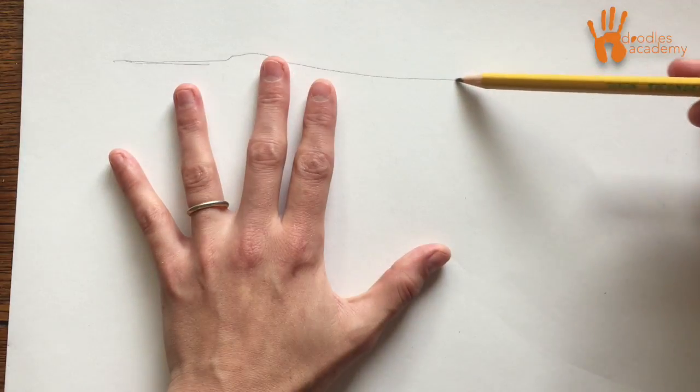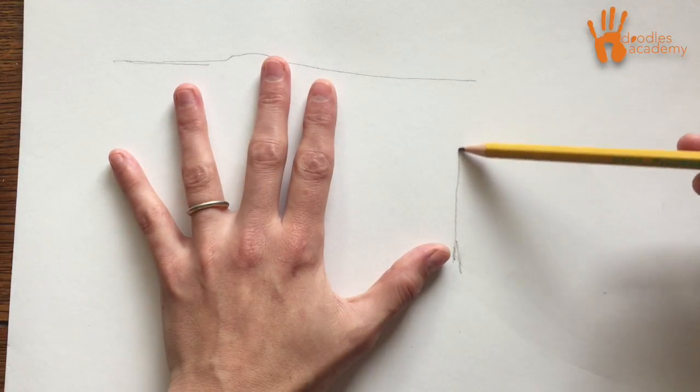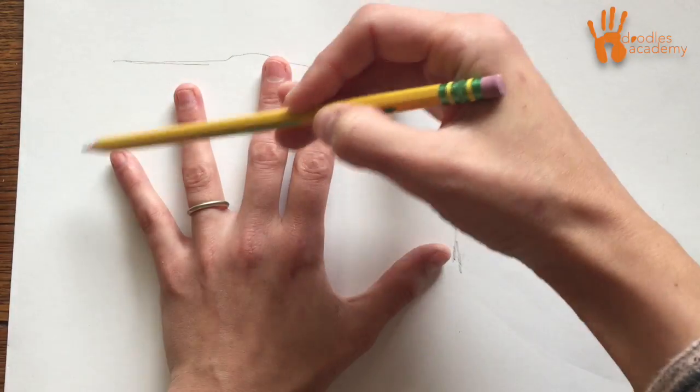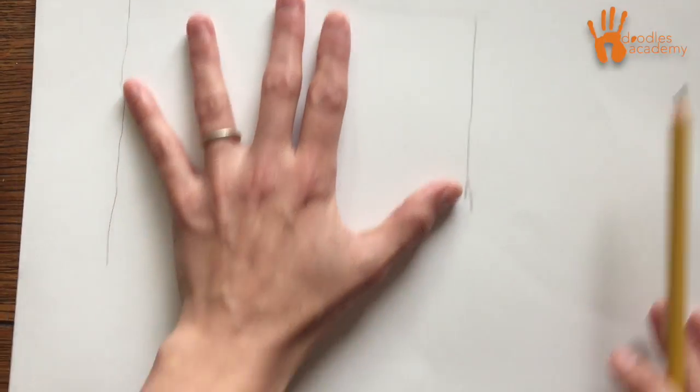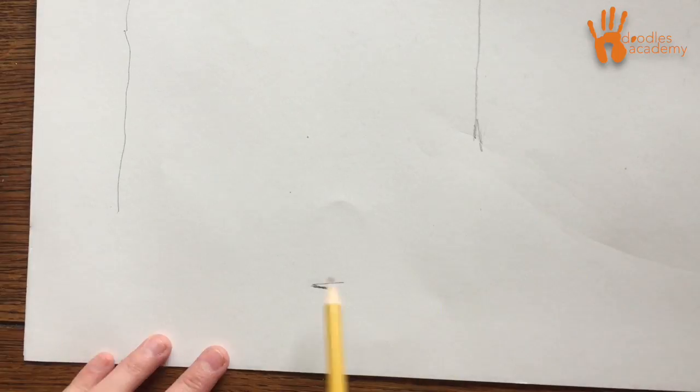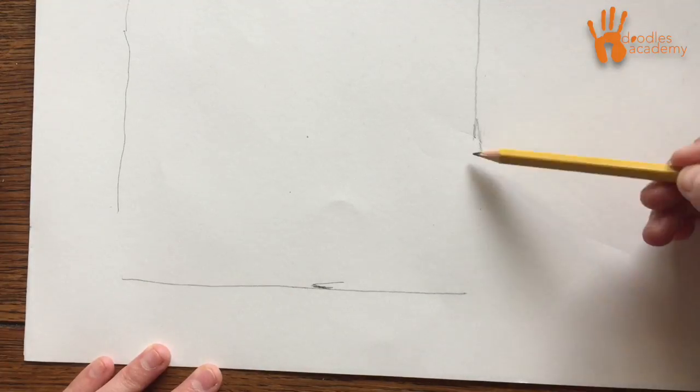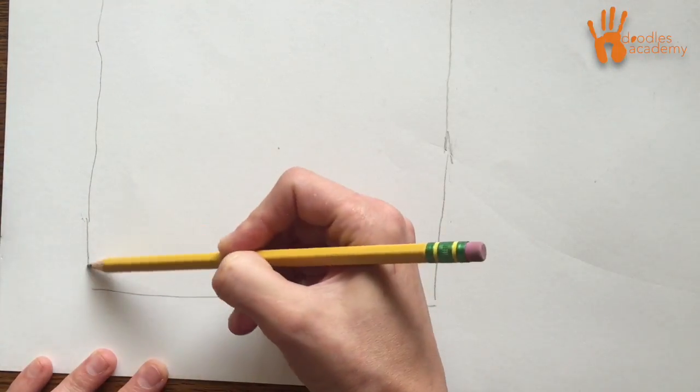So put your hand down on your paper and lightly draw a box around your hand. You're going to draw lightly because we're going to erase this line, so don't press down too hard. Your hand should fit inside that box.